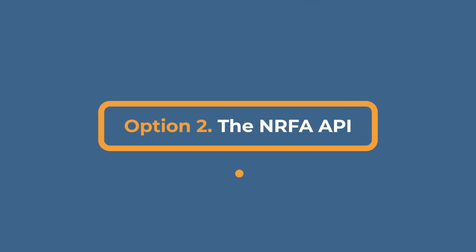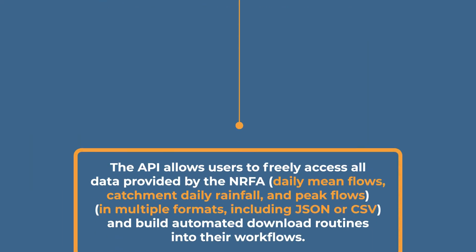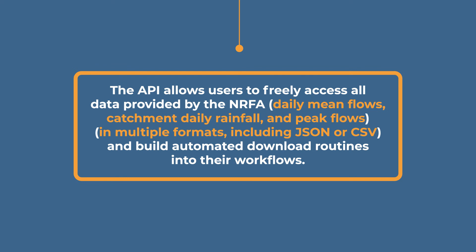Option 2. The NRFA API allows users to freely access all data provided by the NRFA — daily mean flows, catchment daily rainfall and peak flows — in multiple formats including JSON or CSV, and build automated download routines into their workflows.